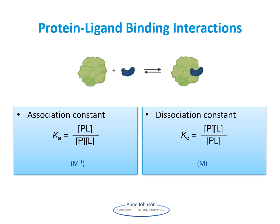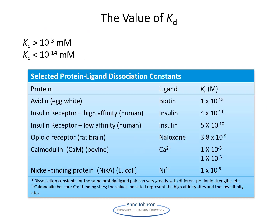We can measure the Ka or Kd experimentally by determining the dependence of binding on ligand concentration. In this table, you can see that there are a wide range of Kd values for protein ligand interactions. Kd values greater than 10 to the minus 3 millimolar show very weak binding, while Kd values less than 10 to the minus 14 are very strong, almost irreversible binding.